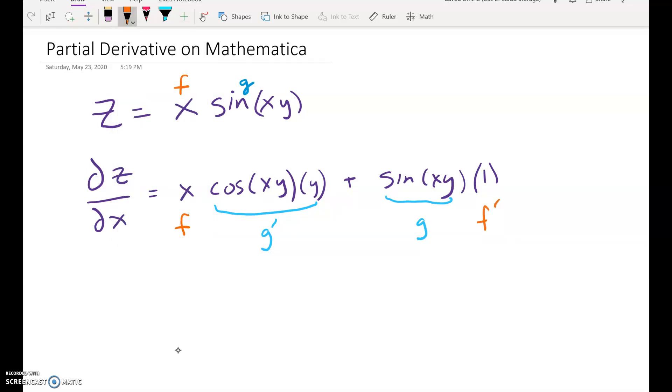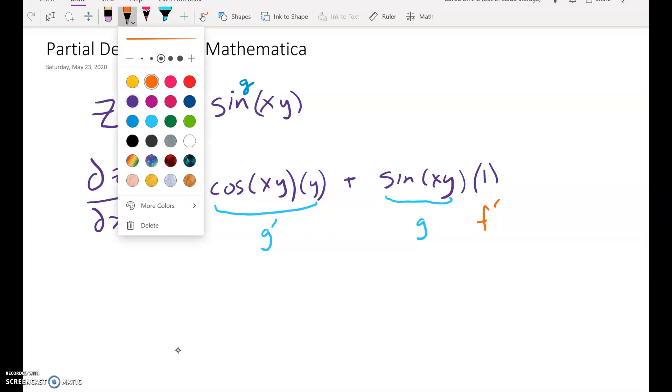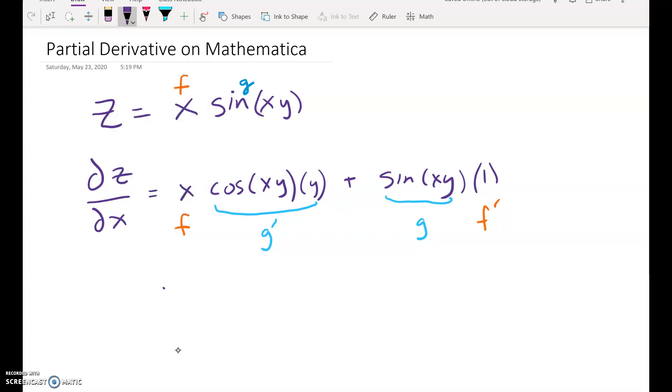We can simplify this a little bit. Let's move the xy up in front together. xy times cosine xy, and then one times sine xy is just sine of xy. So there's the derivative with respect to x.